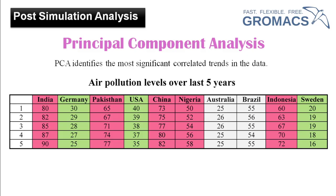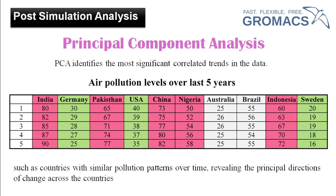The major question is: what will be the first principal component and what will be the second? The first principal component contains five countries because we want to identify the major change. If we extend this to 200 countries and 165 countries are following a particular trend, then that cluster forms the first principal component — it captures the largest variance.